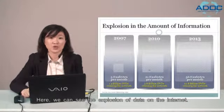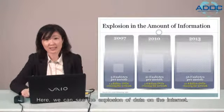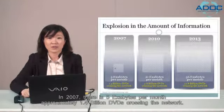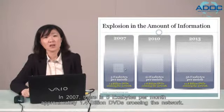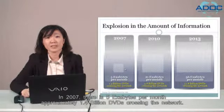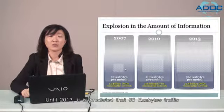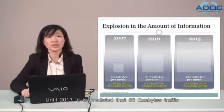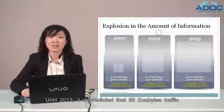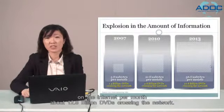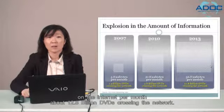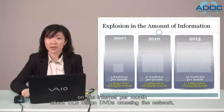We can see the explosion of data on the internet. In 2007, there were 5 exabytes per month, approximately 1.4 billion DVDs crossing the network. By 2013, it is predicted that 56 exabytes of traffic on the internet per month, about 12.8 billion DVDs crossing the network.